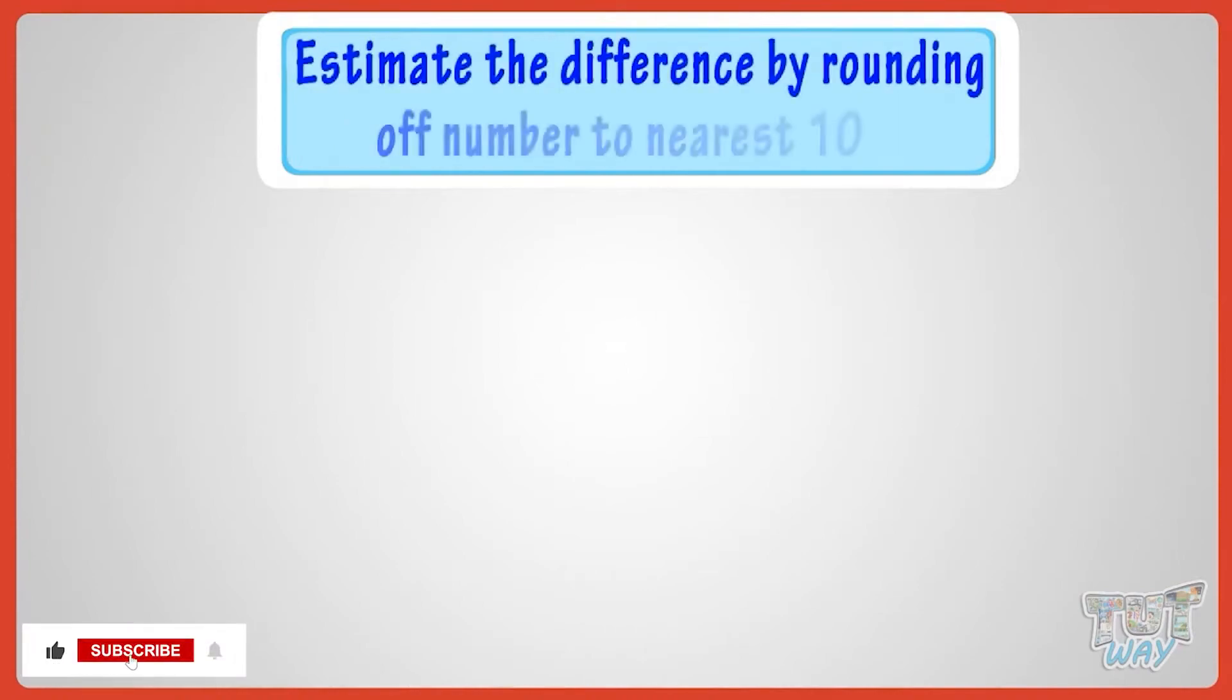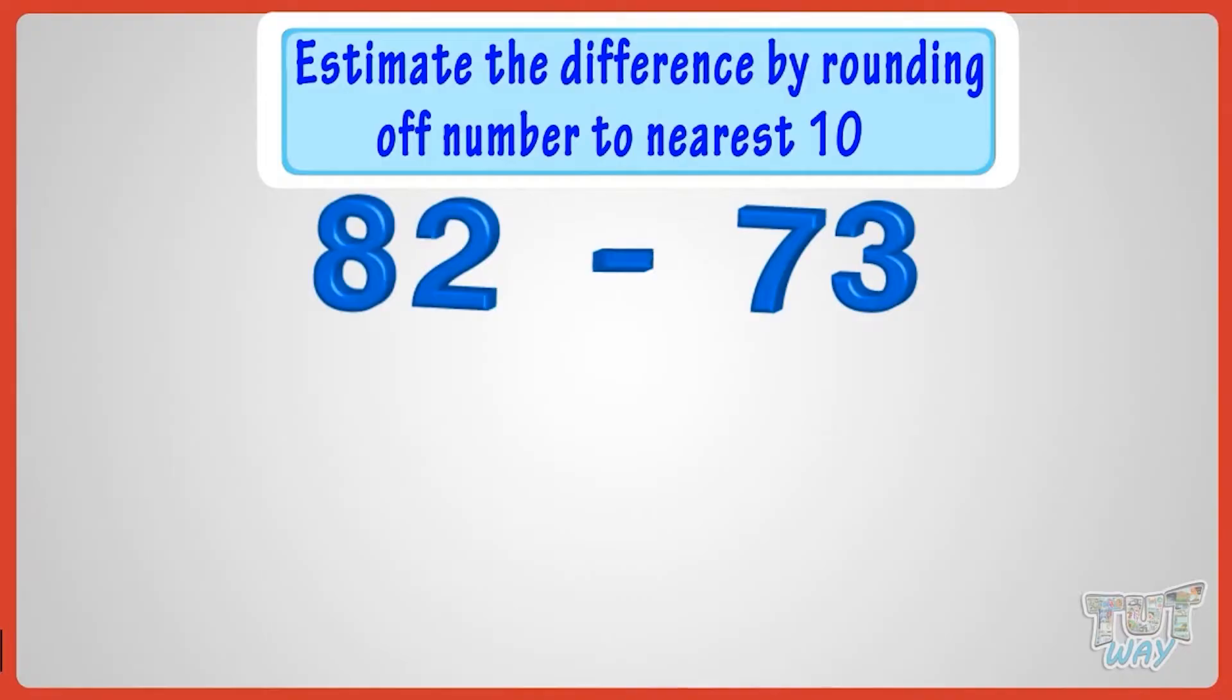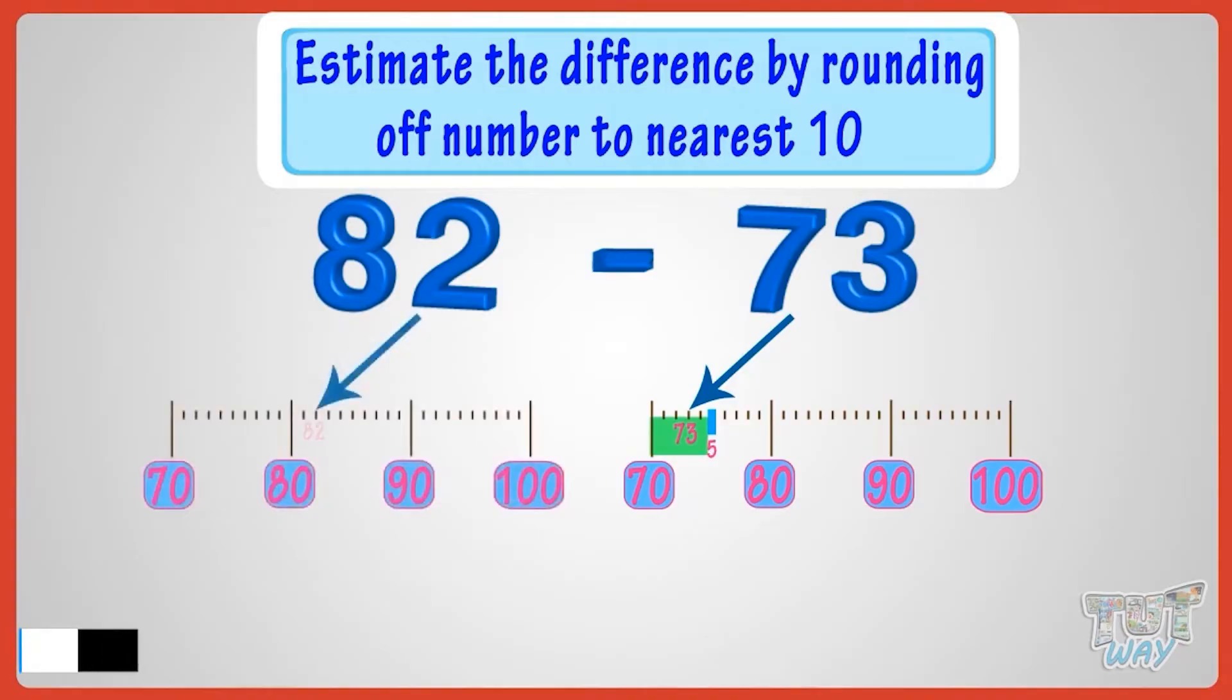We have to subtract 73 from 82. Here both the numbers are midway between two tens, so first we will be rounding them off. Rounding off 73 to nearest ten, we will get 70 as 73 is below the 5 mark. Rounding off 82 to nearest ten, we will get 80 as 82 is below the 5 mark.